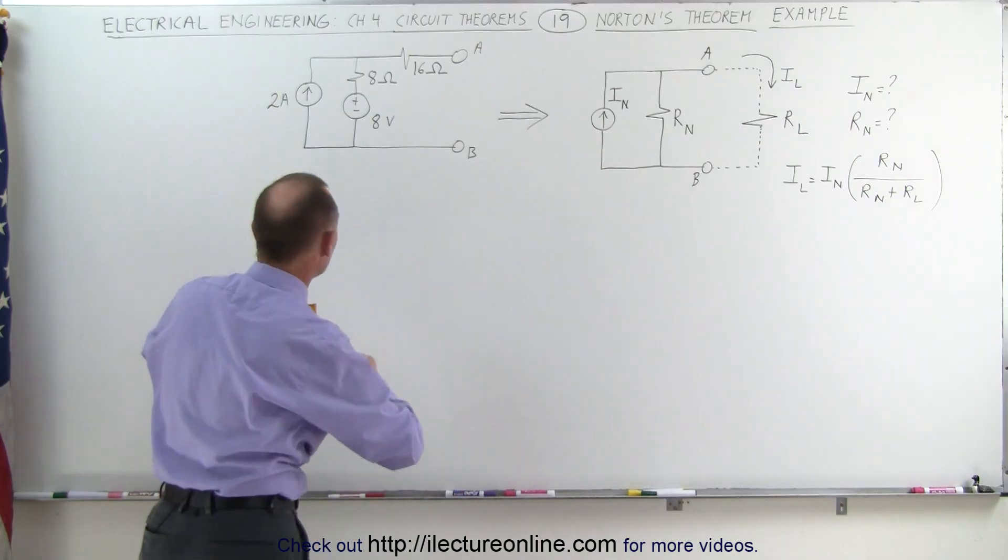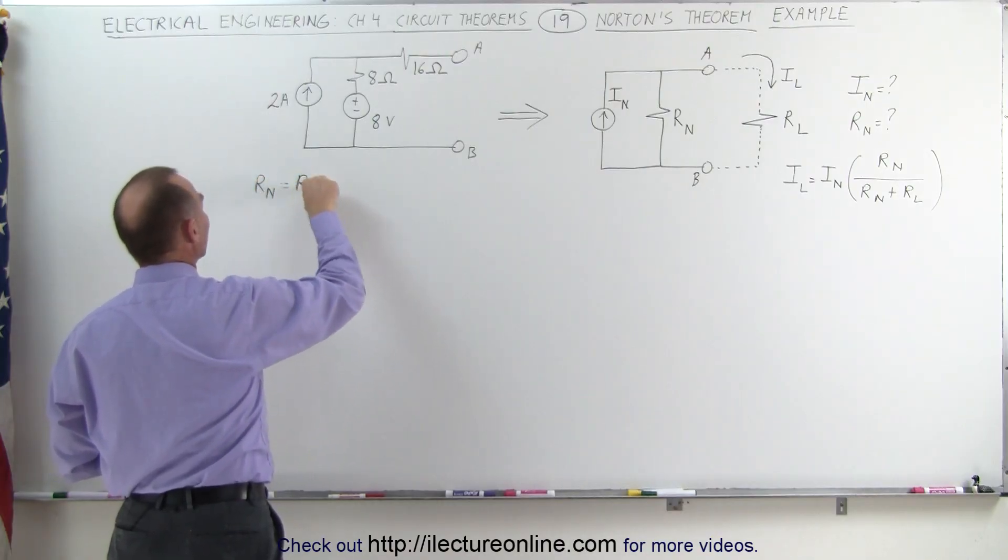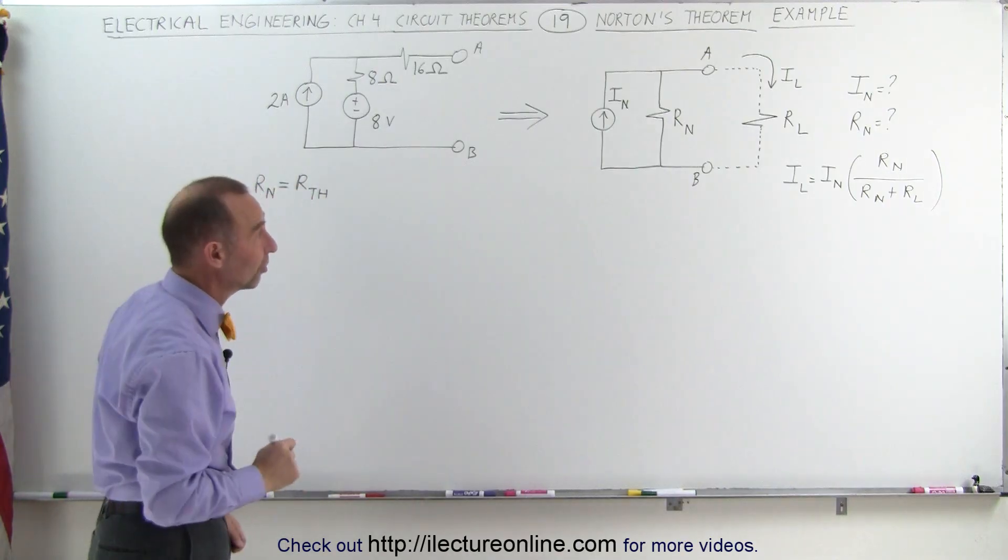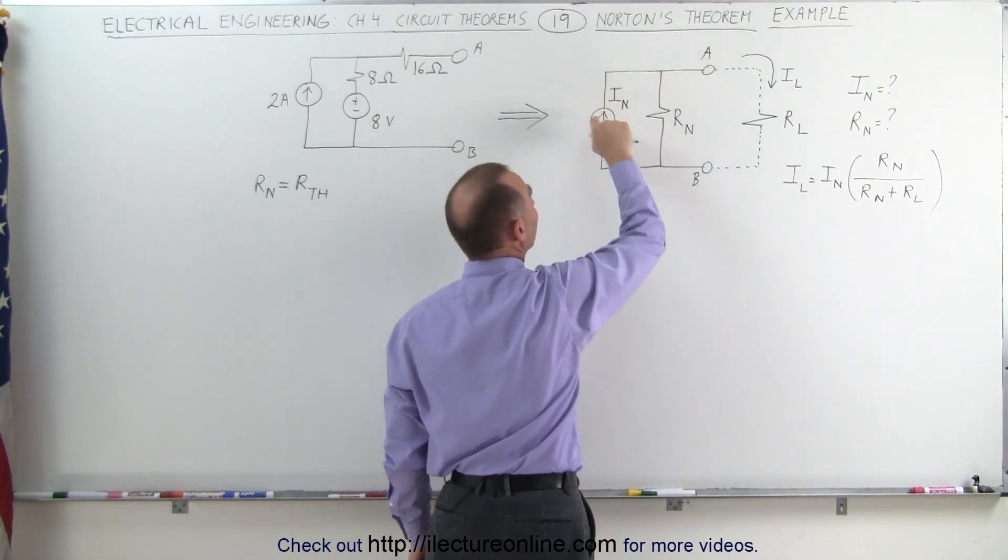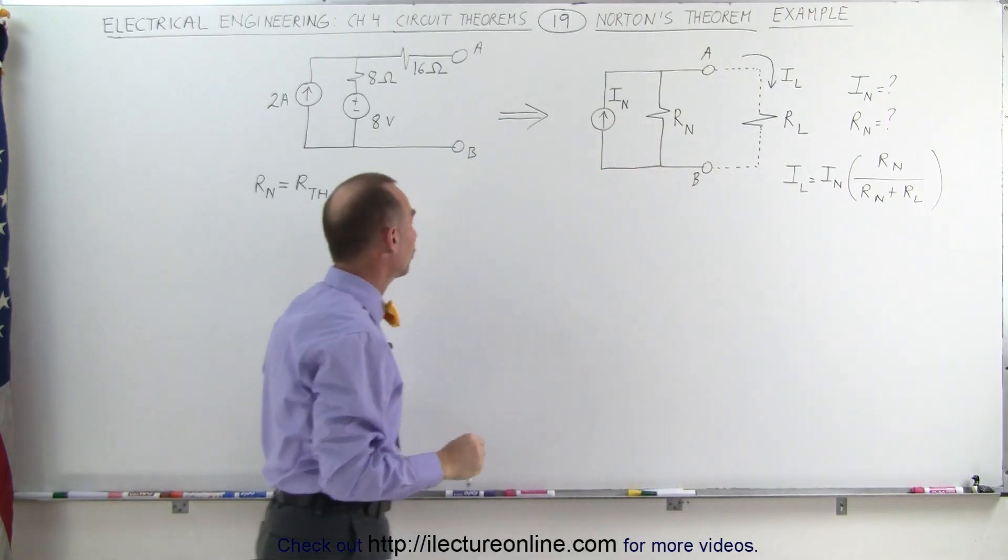Well starting out with the Norton's resistance, R sub n, it turns out that is equal to the Thevenin's resistance. We use the exact same method to find the equivalent resistance. Remember that with Thevenin's resistance we had it in series with the voltage source. In this case we're going to have the Norton's resistance in parallel with the current source.